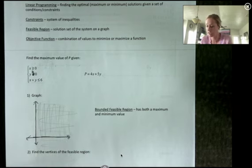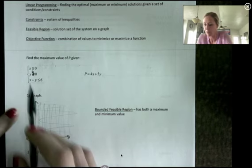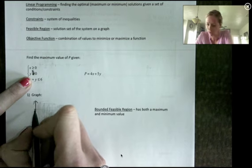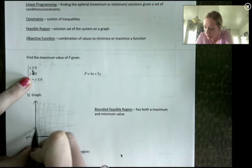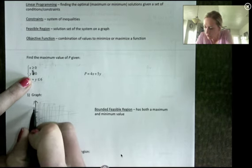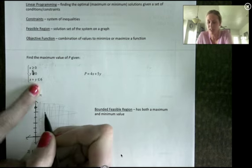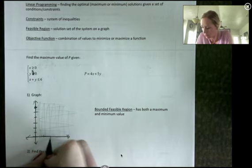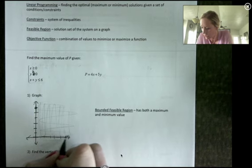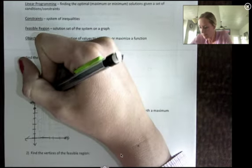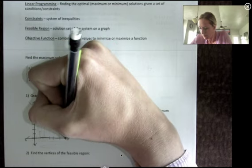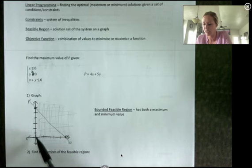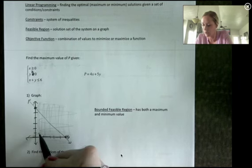And then I have one more x plus y is less than or equal to 6 I'm going to use intercepts. I'm going to plug in 0 for x and so I get y is equal to 6. So I'm just going to graph up here the y intercept of 6 and I actually get the same thing when I put in 0 for y I get x equals 6. Okay so and then that line.